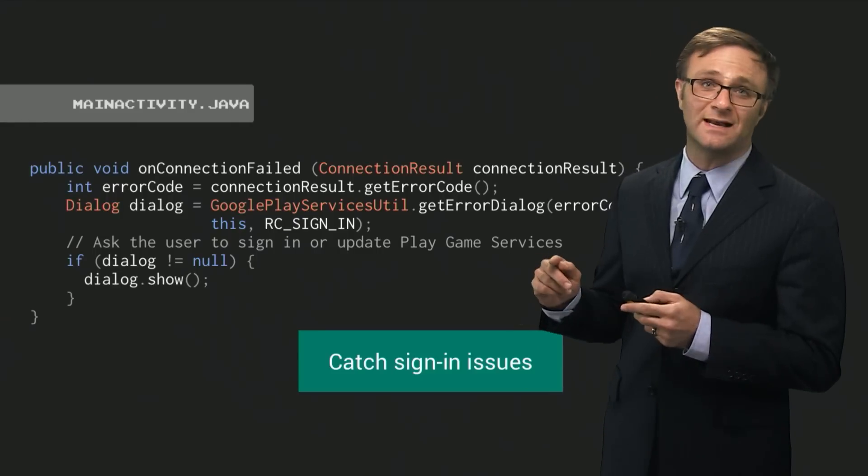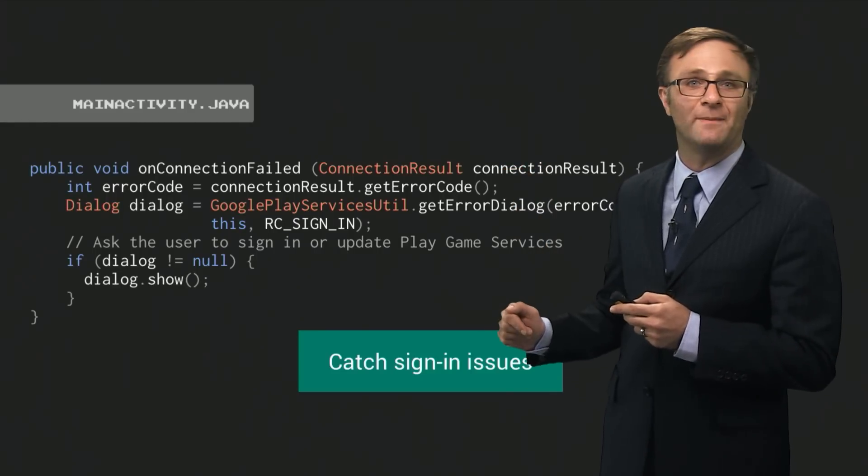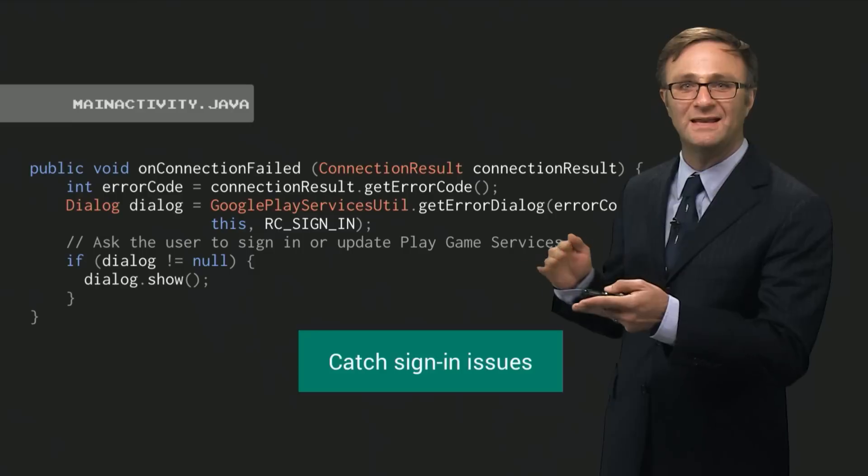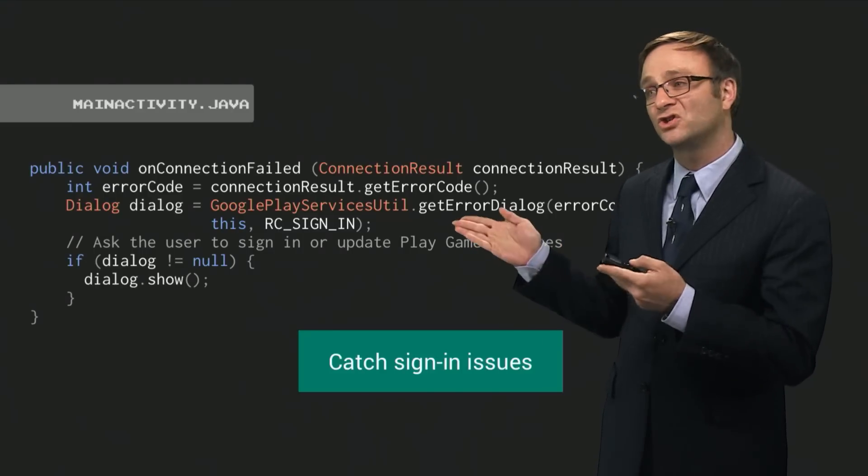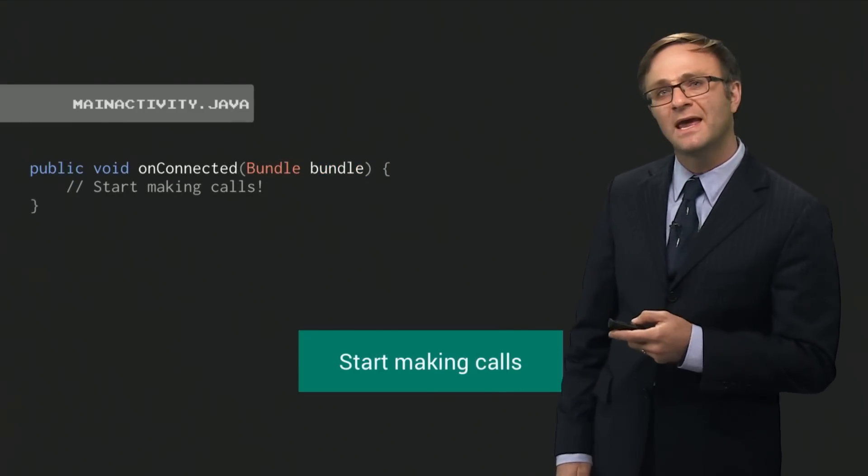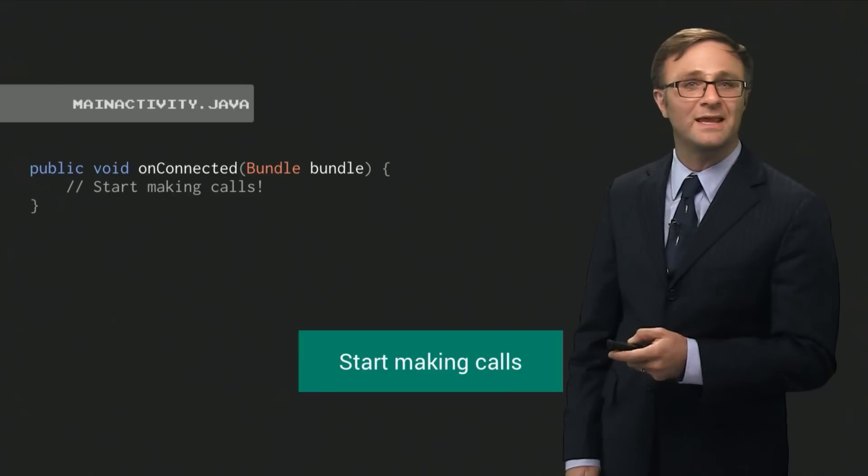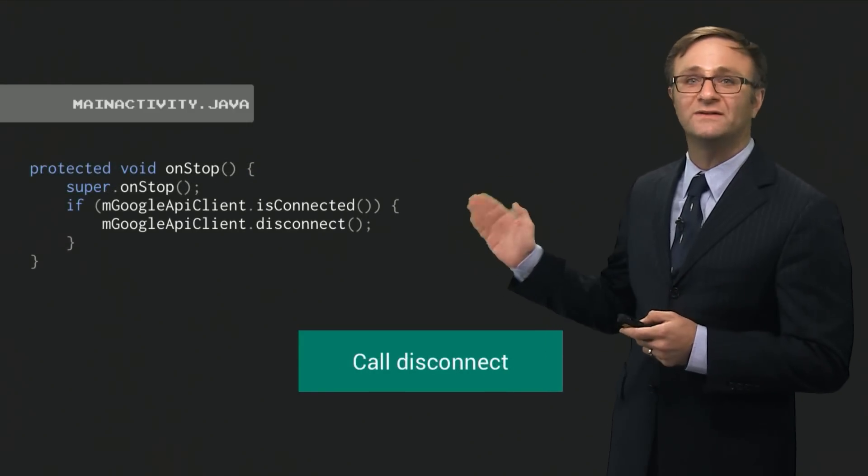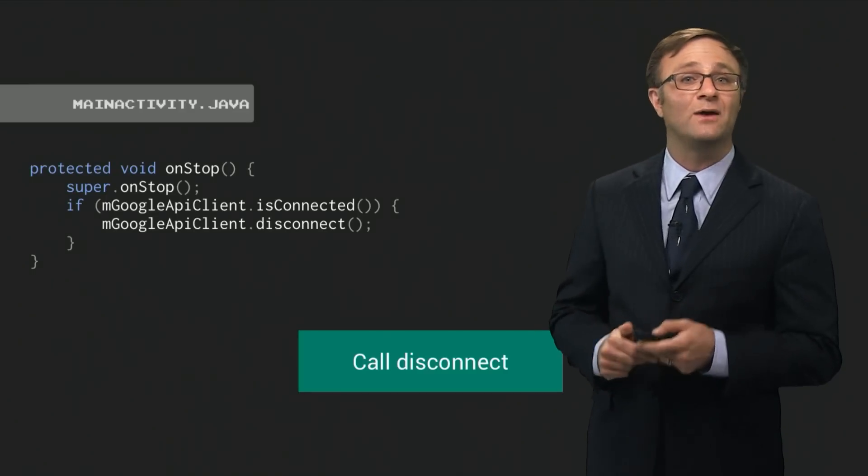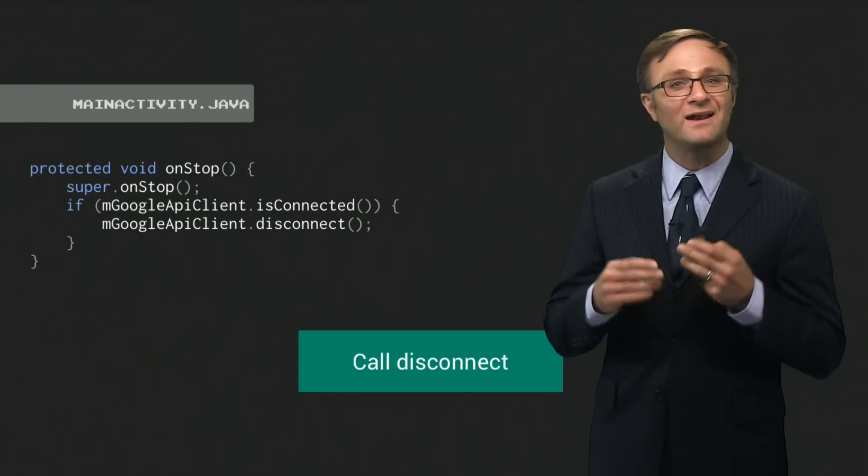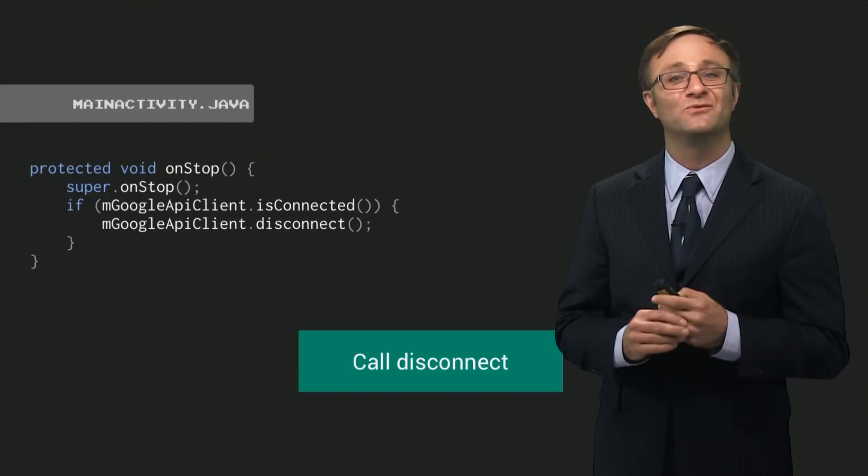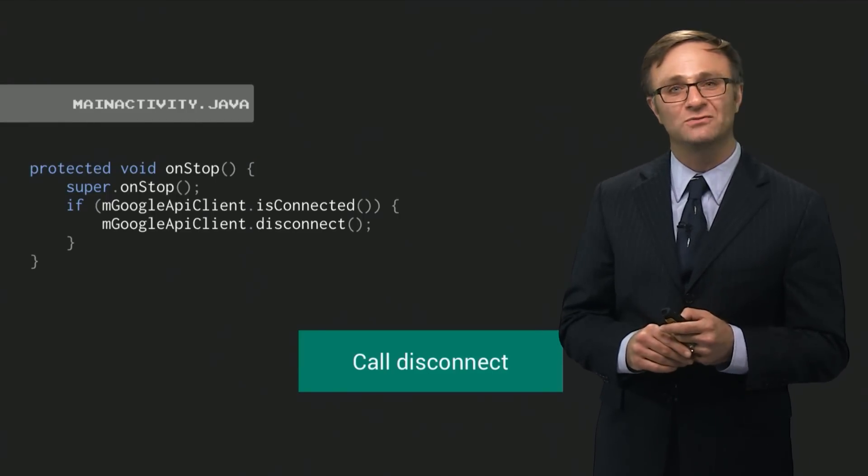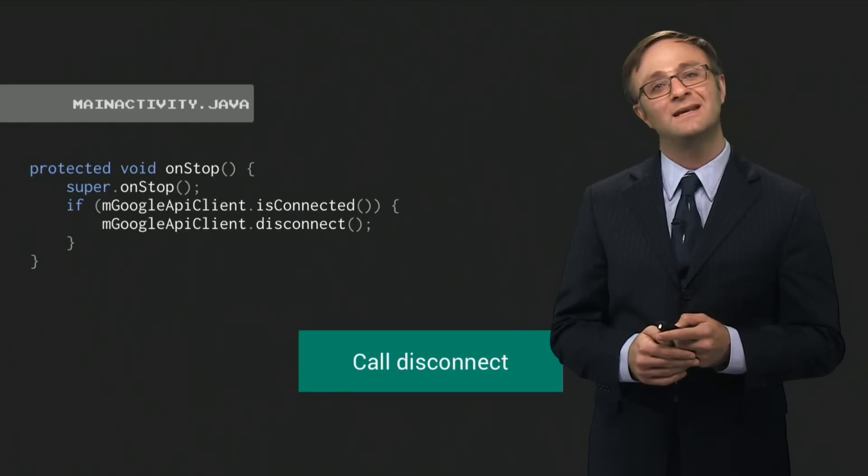You'll catch sign-in problems in your onConnection failed callback. You can analyze the code here, and depending on the error code you get back, you could show a sign-in dialog if necessary. In your onConnect listener, you would start making API calls. And in your activity's onStop method, you would call disconnect, and the Google API client will properly disconnect all of your services. And you've got a nice, straightforward API client with some great error handling, just the way nature, or at least our engineering team, intended.